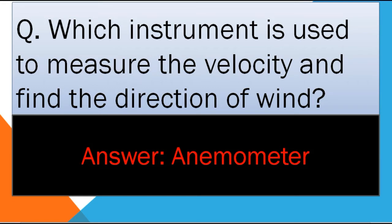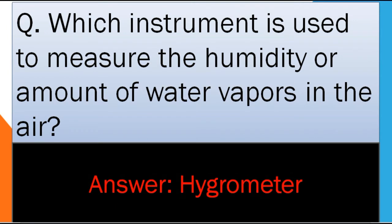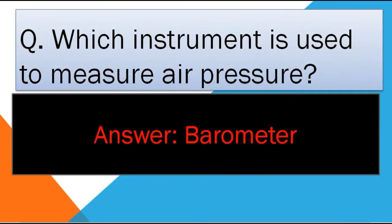Which instrument is used to measure humidity or the amount of water vapors in the air? The answer is Hygrometer. Hygrometer is used to measure humidity or the amount of water vapors in the air.